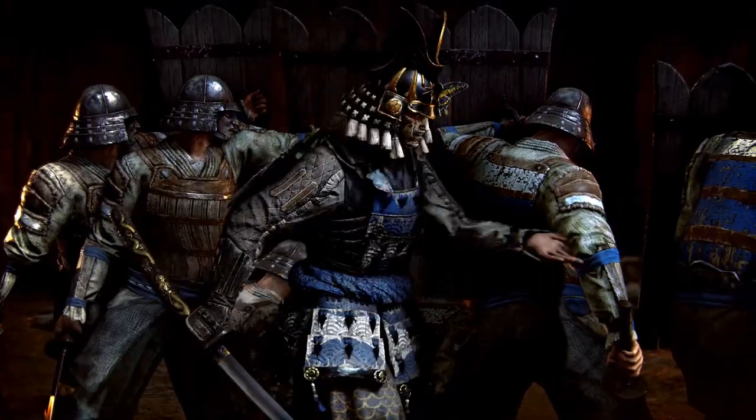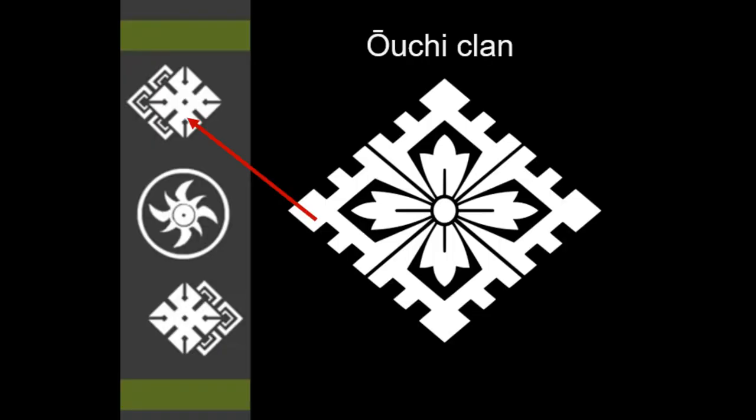When looking at Sajiro's banner, the middle symbol that has been shown — I have been unable to find any additional information about it or what clan it belongs to. If you know any information about this symbol, please tell me in the comments below. Besides that, the other two symbols on the banner bear a very similar appearance to the Ouchi clan.